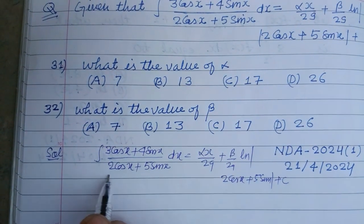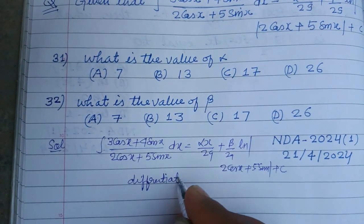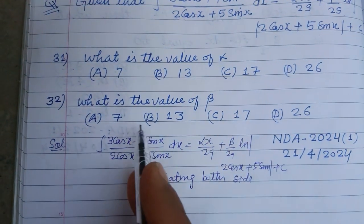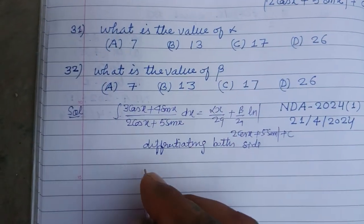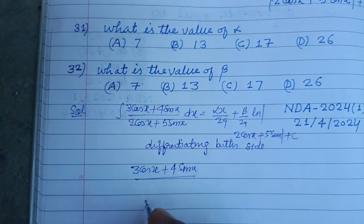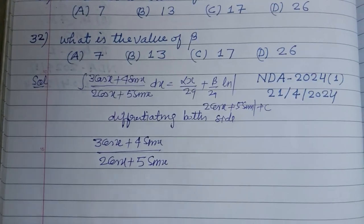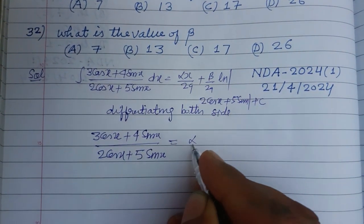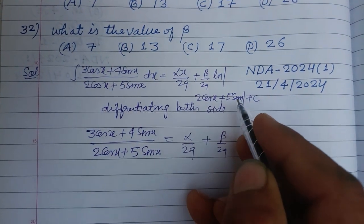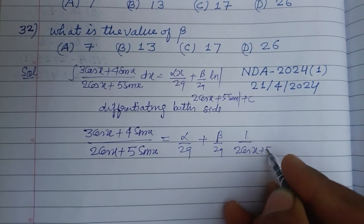Differentiating both sides: the left side gives us (3 cos x + 4 sin x) / (2 cos x + 5 sin x), since the integration is removed. On the right side, the differentiation of alpha x gives alpha upon 29, and the differentiation of beta upon 29 times ln |2 cos x + 5 sin x| gives beta upon 29 times 1 over (2 cos x + 5 sin x).